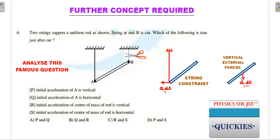Using the same logic for the center of mass: remember, the center of mass is governed by the external forces on the system. Once this string is cut, there are only two external forces — mg and tension T — and both are vertical. This means the acceleration of the center of mass can only have a vertical component, so dt seconds later the velocity of the center of mass will also be vertical, equal to a_cm · dt.